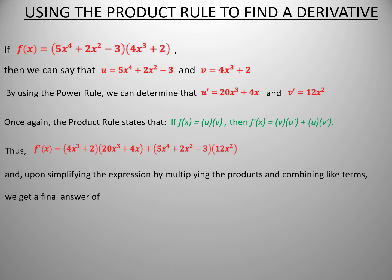And upon simplifying the expression by multiplying the products and combining like terms, we get a final answer of f prime of x equals 140x to the sixth plus 40x to the fourth plus 40x cubed minus 36x squared plus 8x.